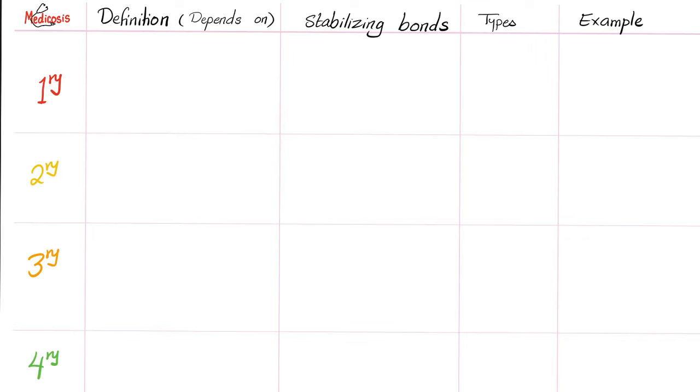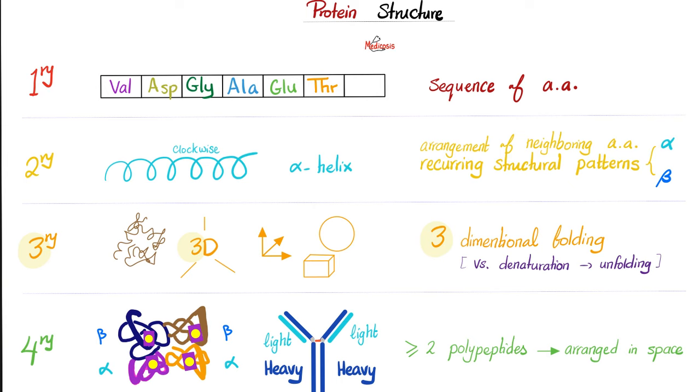It will be better for you if you can do it yourself. Primary protein structure. What the flip is that? It's just the sequence of amino acids. That's it? Yeah. Hey, Medicosis, does it matter that aspartate comes after valine, not valine after aspartate? Yes, of course it matters. It's about the sequence, dude. This is important.